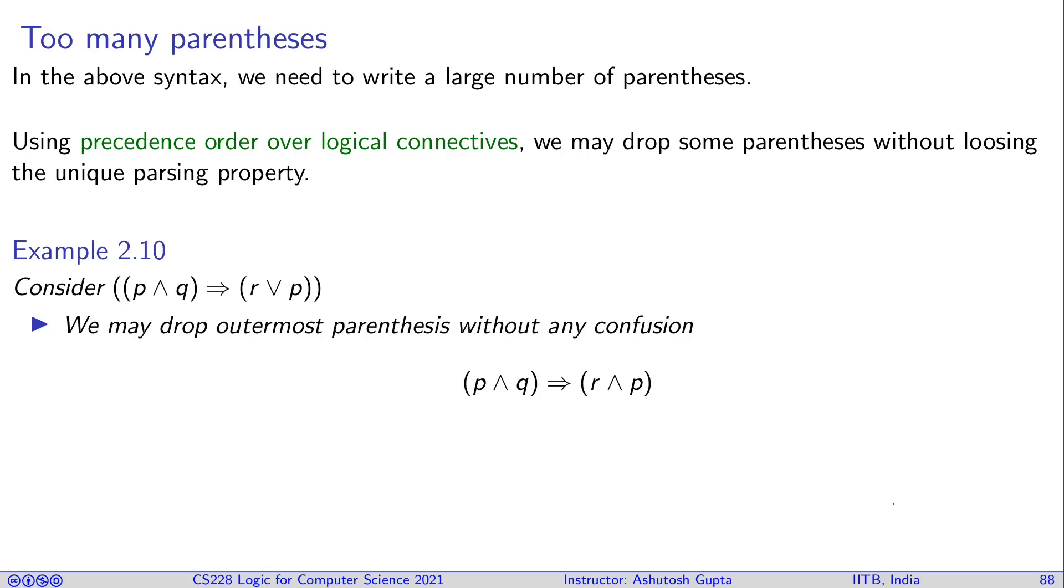So let's look at an example. In this example, you have first a conjunction here, then a disjunction, and then an implication. So for each one of them, you introduced parentheses and you have let's say six parentheses. It's very clear we can drop outermost parentheses very easily without any confusion.